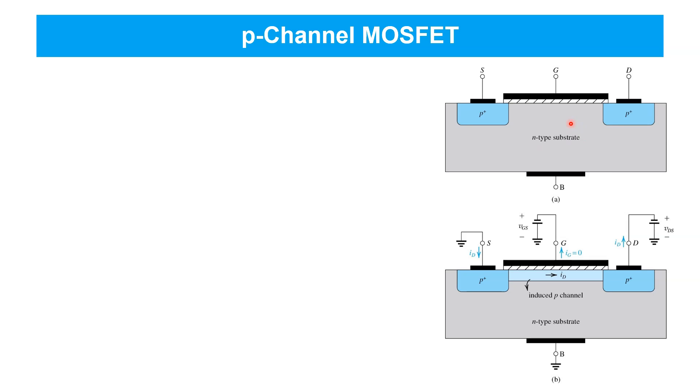In this case, to ensure the depletion region keeps the body terminal insulated from the source and drain, the body is connected to the higher of the two terminal voltages. In the PMOS device, unlike the NMOS device, the terminal with the higher voltage is actually the source.